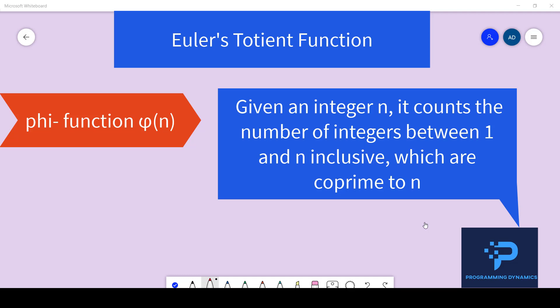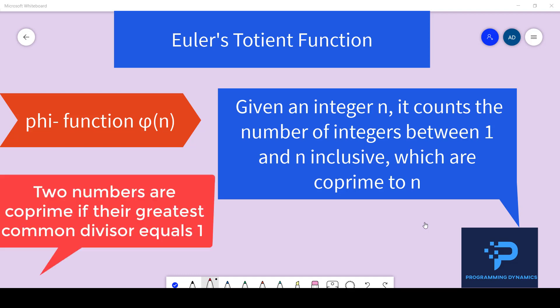Now what are co-prime numbers? Two numbers are co-prime if their greatest common divisor is 1.